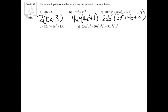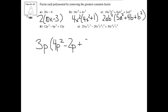For d, we have 12p cubed minus 6p squared plus 15p. The greatest common factor between 12, 6, and 15 would be 3. Taking a look at the p's, we've got p cubed, p squared, and just p — we have at least a p in each one. So 12p cubed divided by 3p is going to be 4p squared. Then negative 6p squared divided by 3p is negative 2p. Then 15p divided by 3p is just 5.